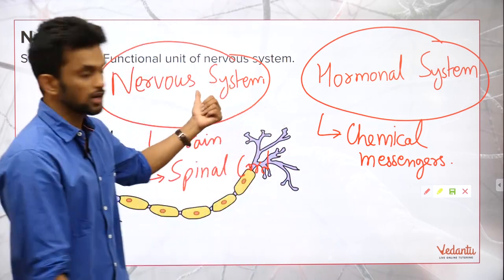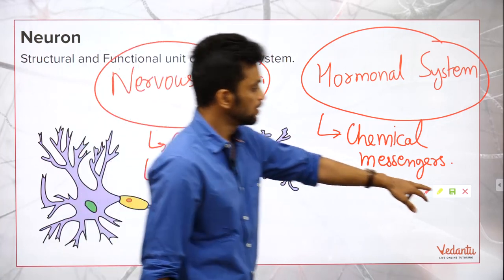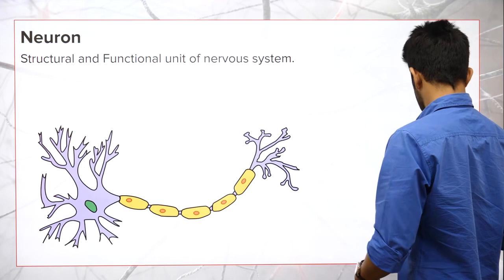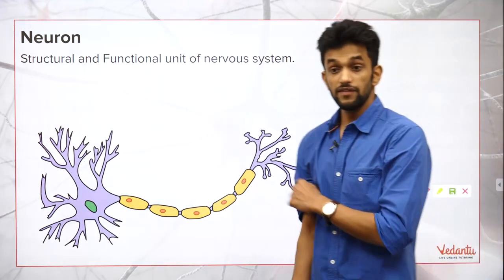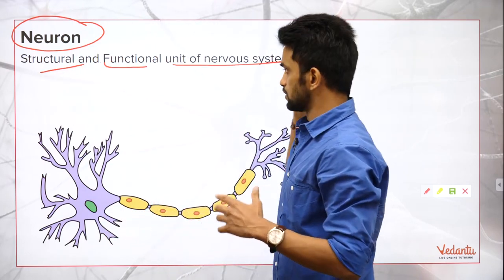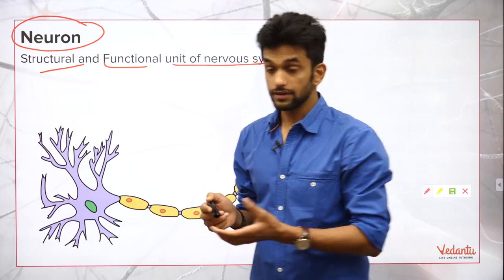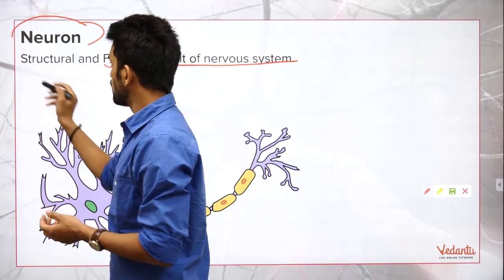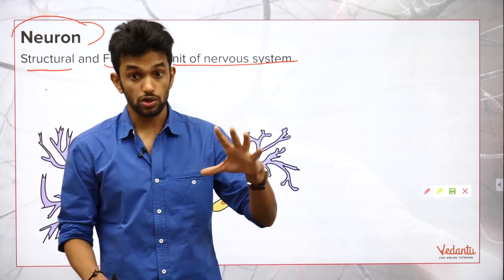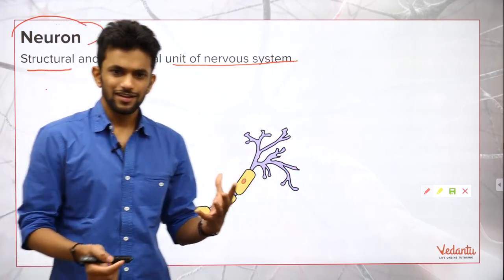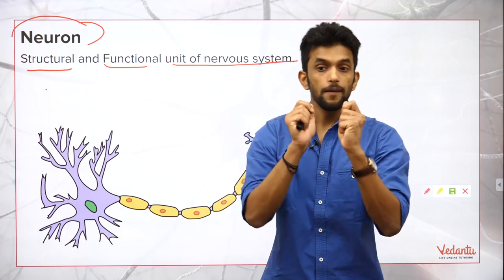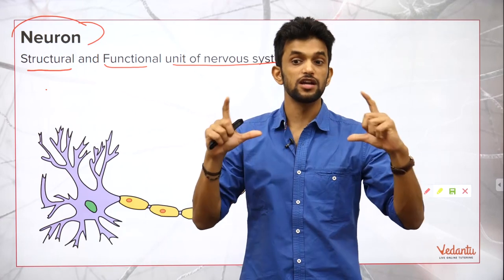Today we are going to study about the nervous system only. When we talk about the nervous system, we say the neuron is the structural and functional unit of the nervous system. What do I mean by this? The neuron makes my nervous system, and all the functions of my nervous system are because of neurons.